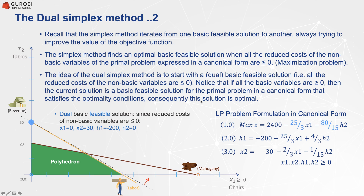If all the basic variables are non-negative, then the current solution is both primal and dual feasible, satisfying optimality conditions. In this example, we have a dual basic feasible solution with reduced costs that are negative: the non-basic variable X1 has a coefficient of negative 25/3, and H2 also has a negative coefficient. The basic variable X2 equals 30, which is feasible, but H1 equals minus 200, which is infeasible. So this problem is dual feasible but not primal feasible.